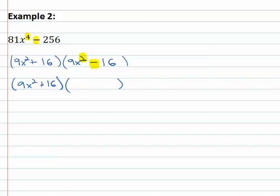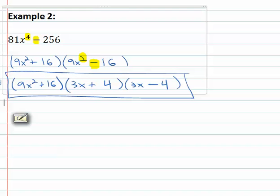That again, is going to factor to the sum and difference of the square roots. The square root of nine x squared is three x. The square root of sixteen is four, and we have now factored to nine x squared plus sixteen times three x plus four times three x minus four.